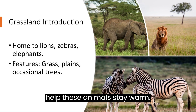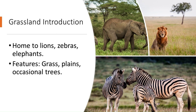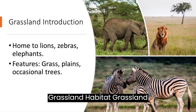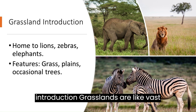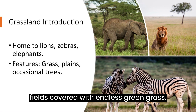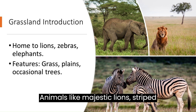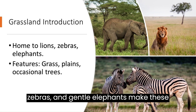Grasslands are like vast fields covered with endless green grass. Animals like majestic lions, striped zebras, and gentle elephants make these grasslands their home.